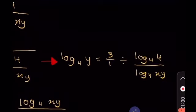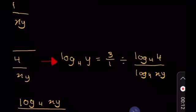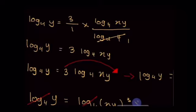Seterusnya, kita perlu tukarkan persamaan menjadi dalam bentuk yang mudah. Maka ia akan jadi log Y asas 4 sama dengan 3 per 1 bahagi log 4 asas 4 per log XY asas 4. Seterusnya kita akan dapat log Y asas 4 sama dengan 3 per 1 darab log XY asas 4 per log 4 asas 4. Seperti yang kita tahu, log 4 asas 4 tu kita boleh potong, so dia akan berubah jadi 1. Jadi yang tinggal hanyalah log Y asas 4 sama dengan 3 log XY asas 4.